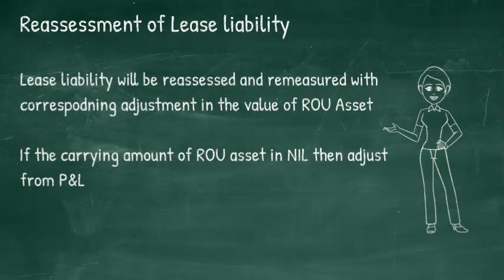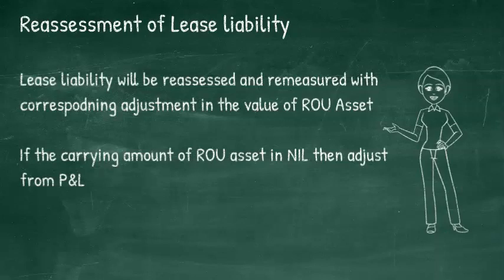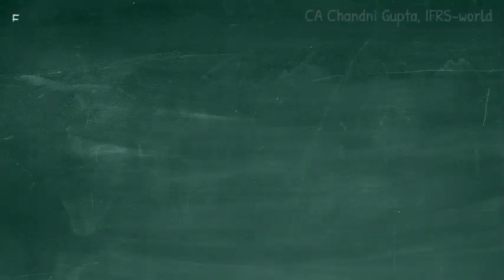If the ROU asset value on that date is nil due to depreciation or impairment, the corresponding adjustment will be made in profit and loss. Through this standard, the IASB has made it very clear that substance will prevail above legal form and no liability shall remain hidden. Lessees are now required to bring the lease liability from mere disclosure in notes to the face of the balance sheet.